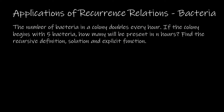For our first example, we're going to work through this together. This is the example I did cover in the previous Discrete Math 1 video, but hopefully I'll do a better job of explaining it here. We are asked to find three different things: a recursive definition, the solution, and the explicit function. The problem is: the number of bacteria in a colony doubles every hour. If the colony begins with five bacteria, how many will be present in n hours?